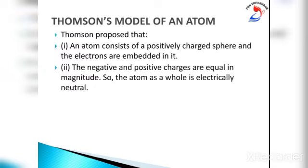When J.J. Thomson proposed his model of the atom in 1903, only electrons and protons were known to be present in the atom. According to Thomson's model, an atom consists of a sphere of positive charge with negatively charged electrons embedded in it. The positive and negative charges in an atom are equal in magnitude, due to which an atom is electrically neutral — it has no overall positive or negative charge.